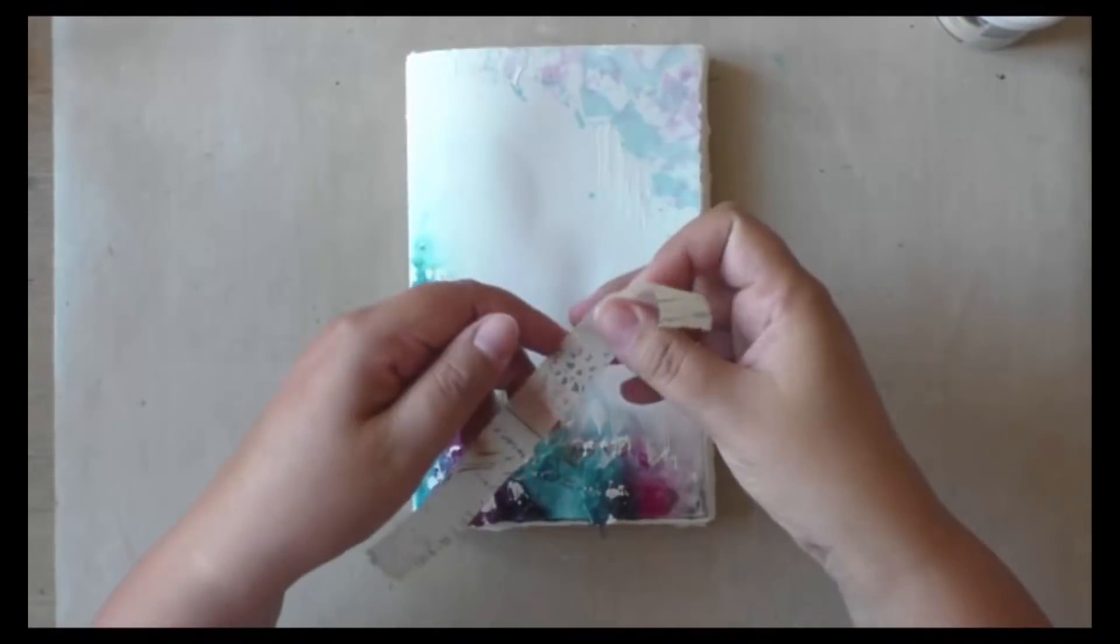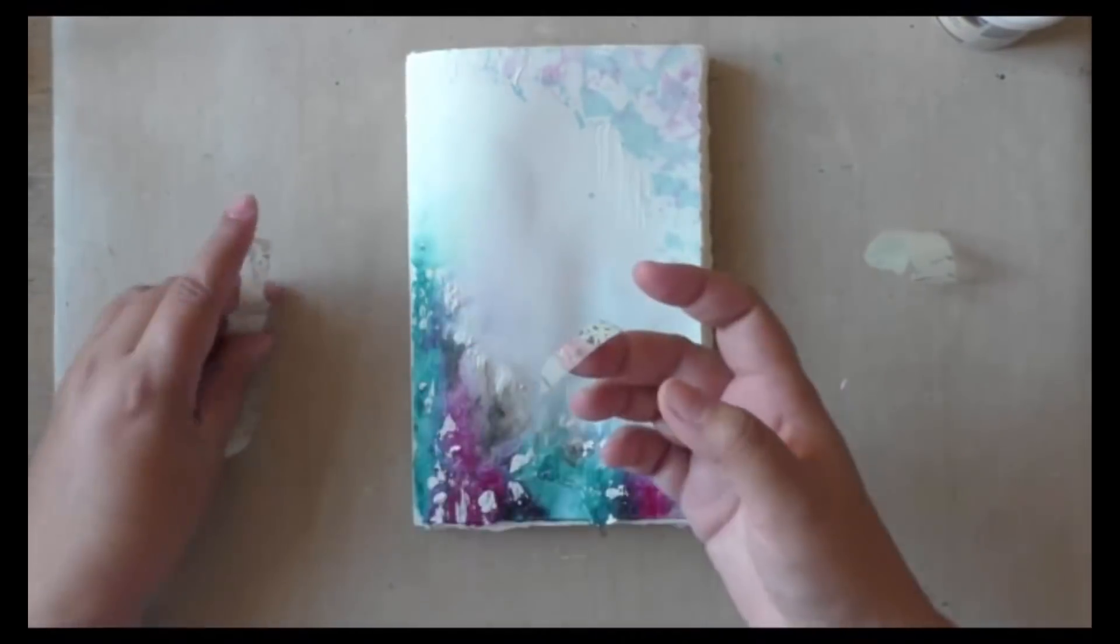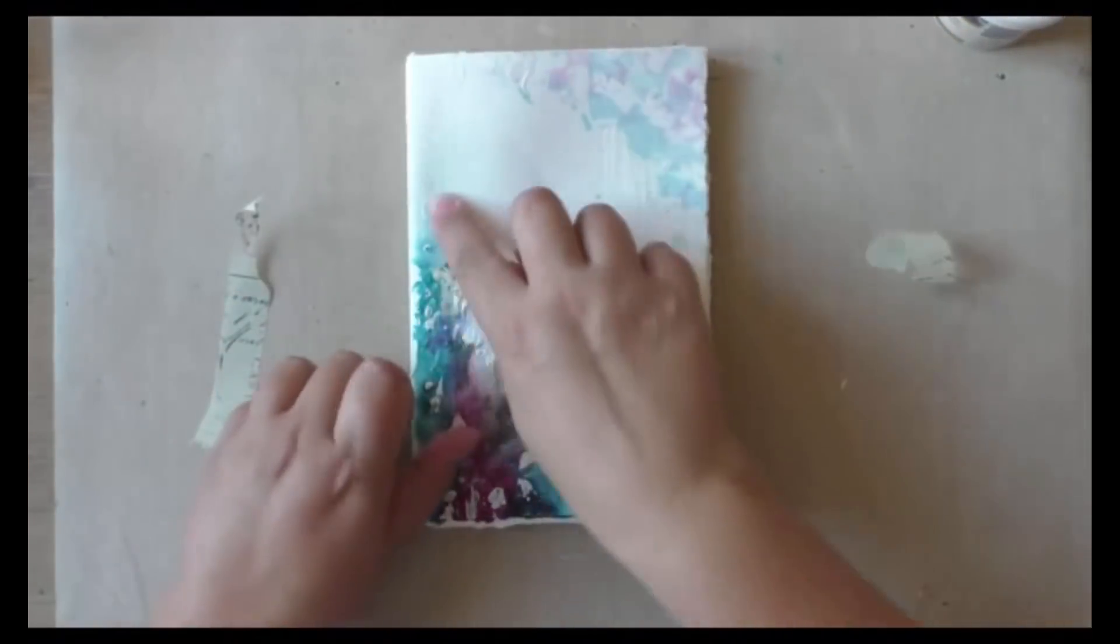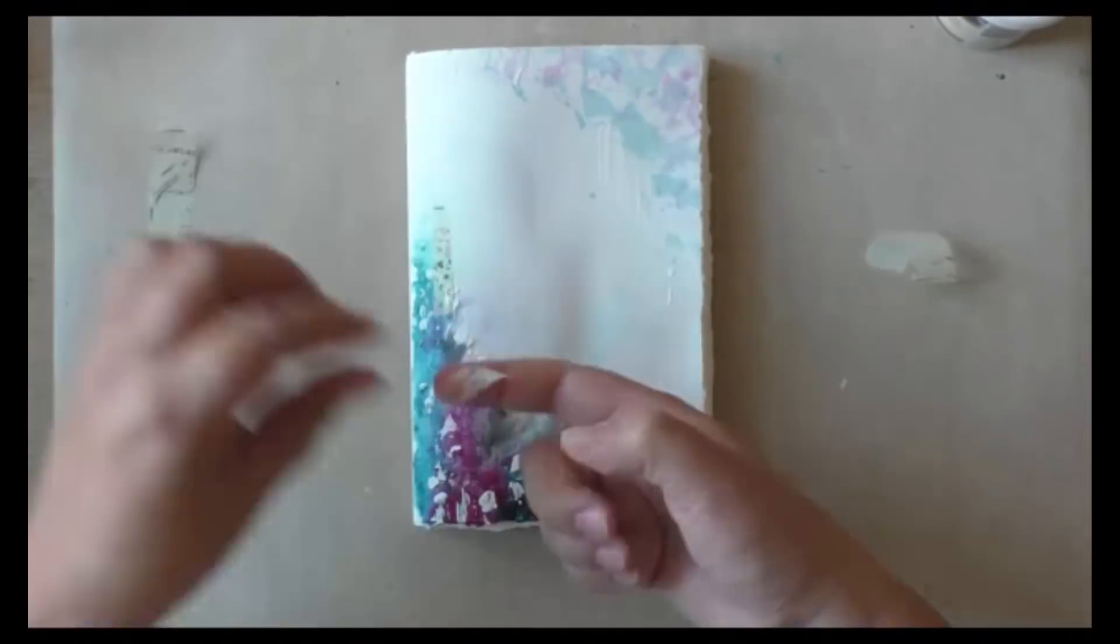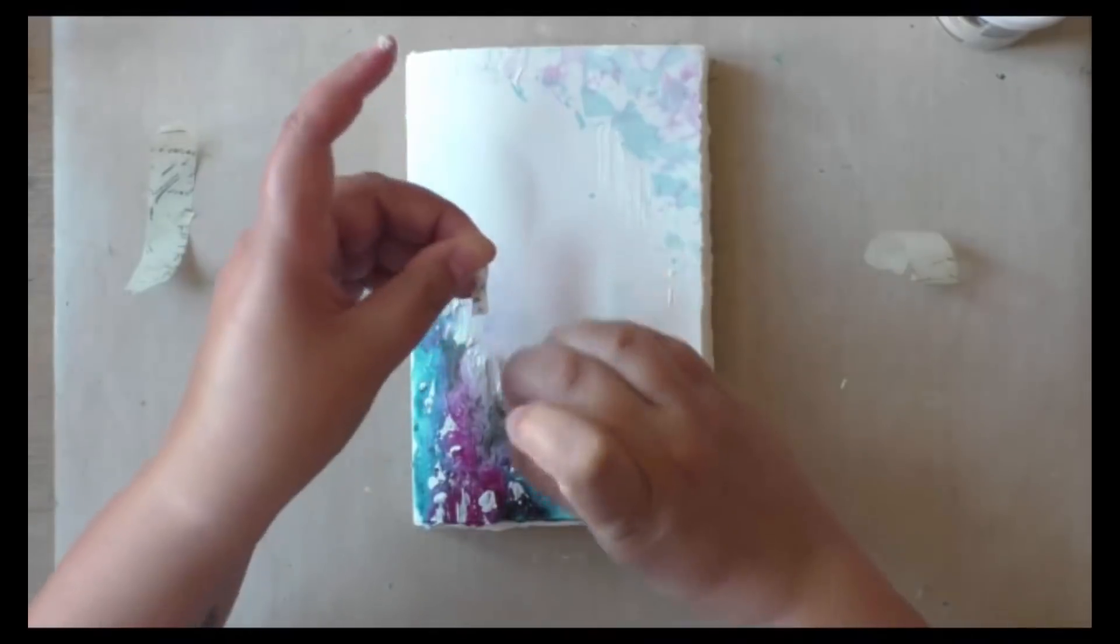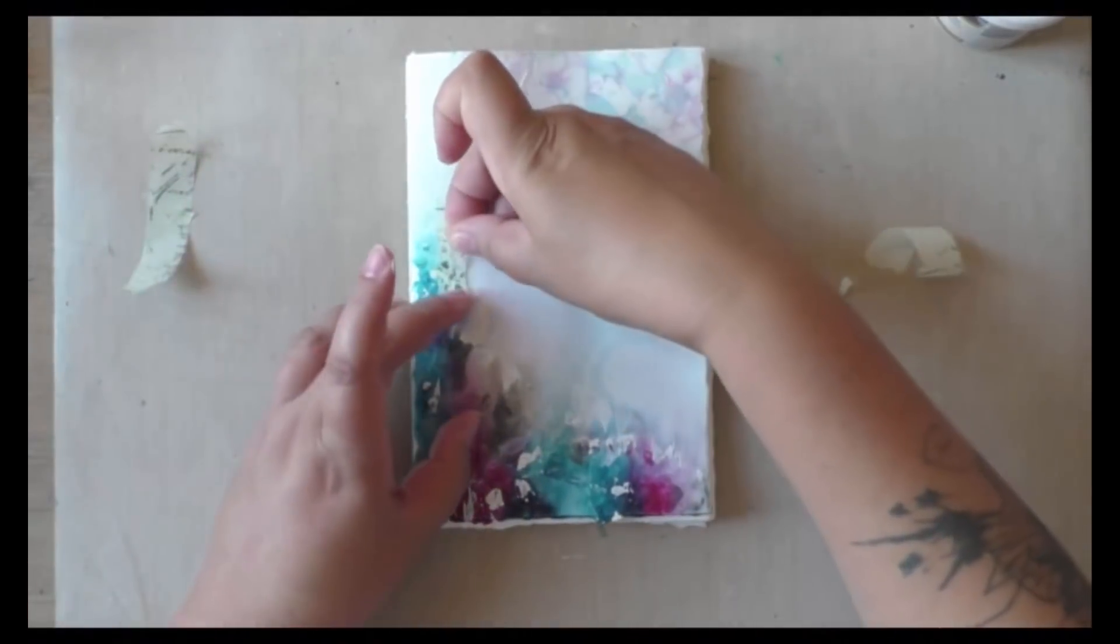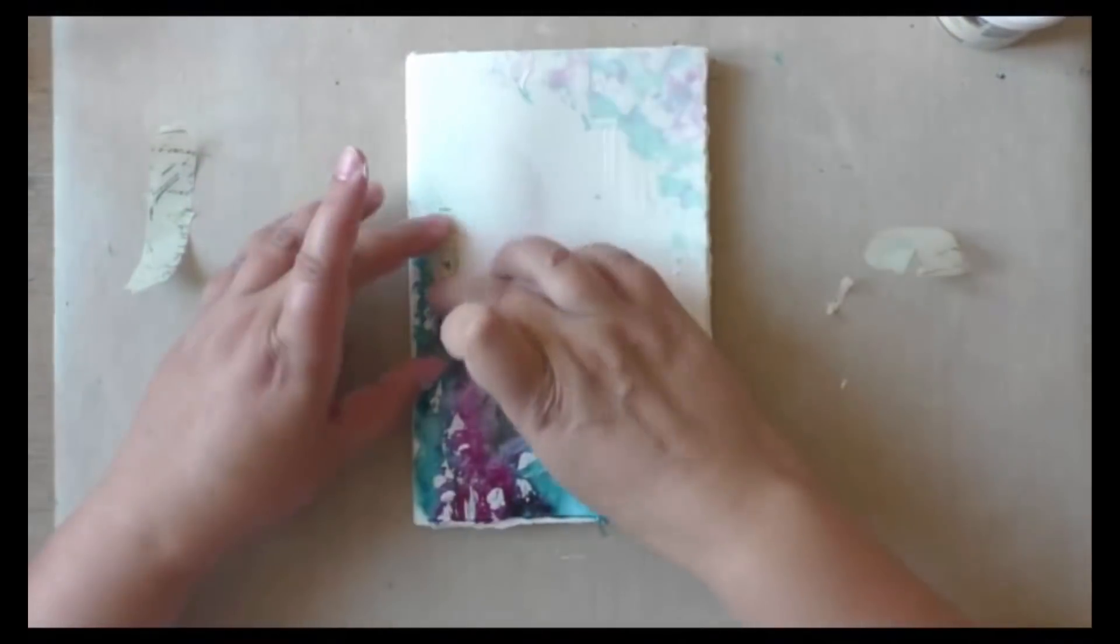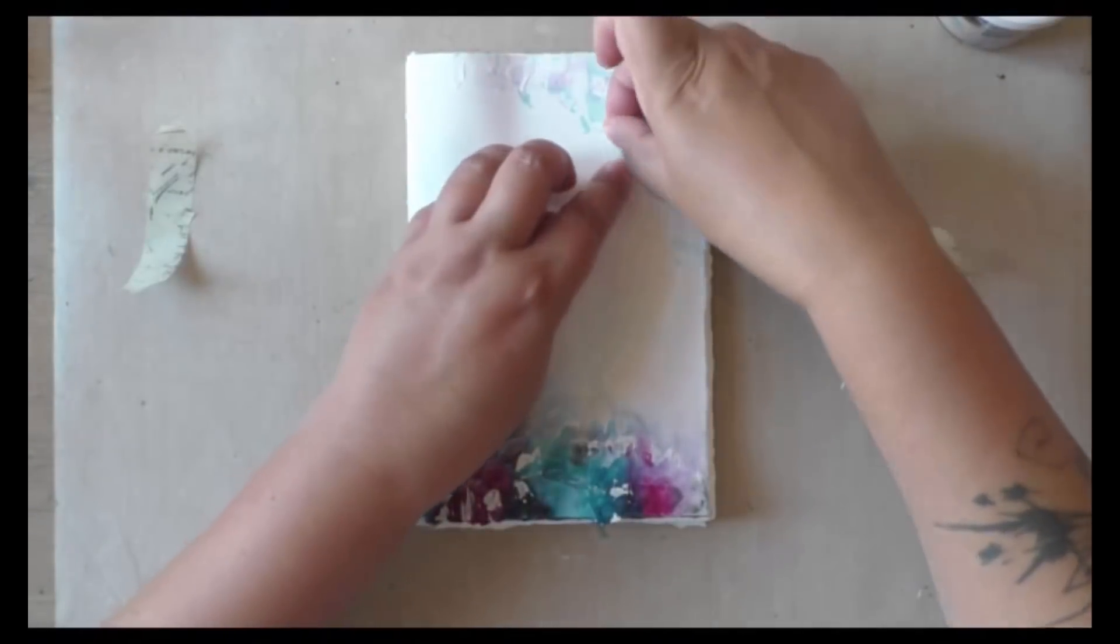For my next layer I took out some washi tapes, these are the Tim Holtz ones, these are very old, I've had these for like forever. And again I'm just adding hints of washi tape here and there. As you can see I'm really using tiny bits and pieces of it.